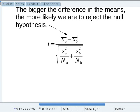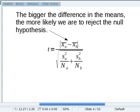First and most important, we have the difference in the means. The bigger that difference is, the bigger the t-statistic is, and the more likely we are to reject the null hypothesis.